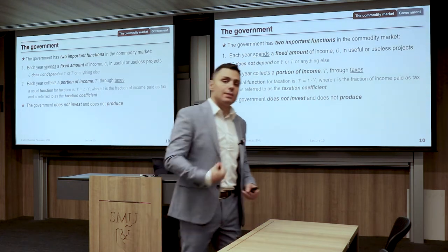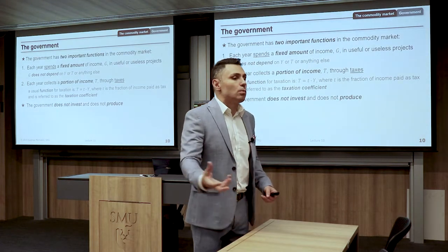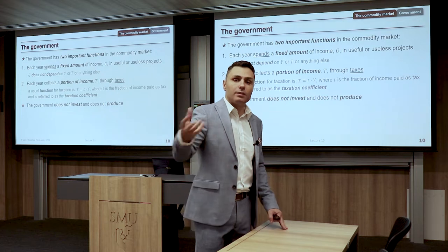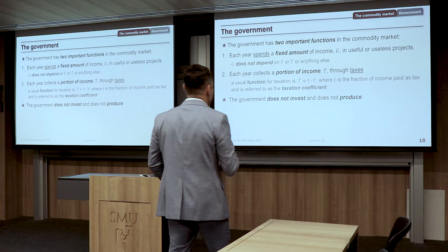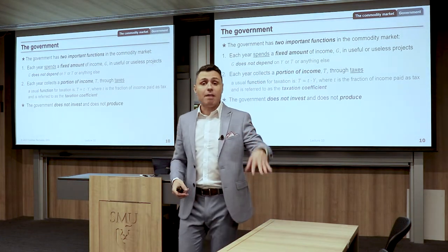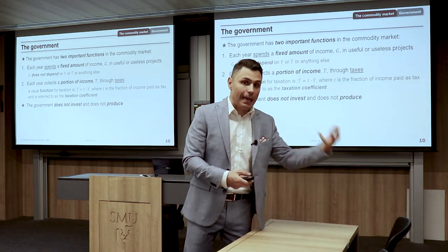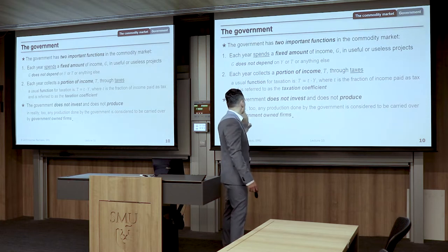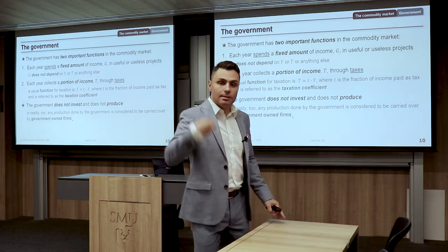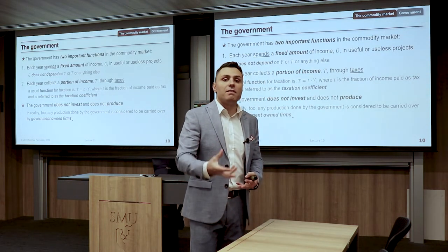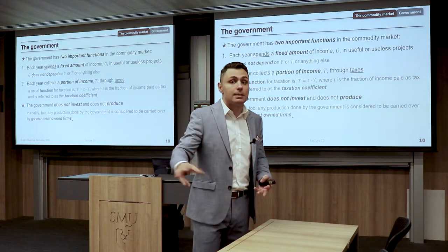The government does not invest and does not produce — at least in this model. You might object: the government produces a lot of things, like police order, court arbitration, and infrastructure. Yes, but in our model, the government owns entities which are considered firms, and those firms carry out the investment and production. Any production done by the government is considered to be carried on by government-owned firms. The government only governs — it spends G, collects T, and if it runs some production, that is run by firms it owns.